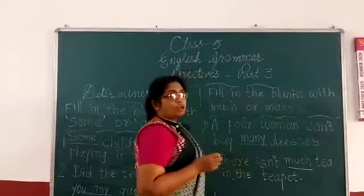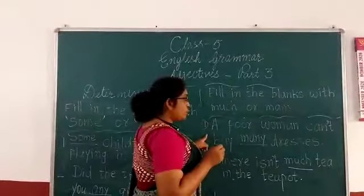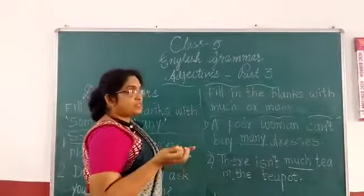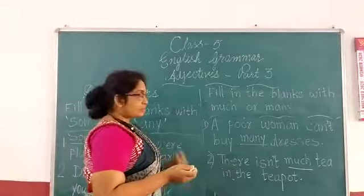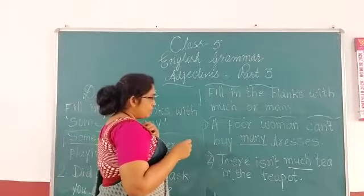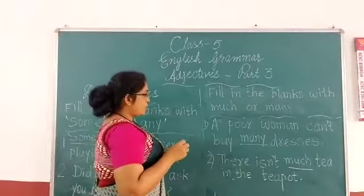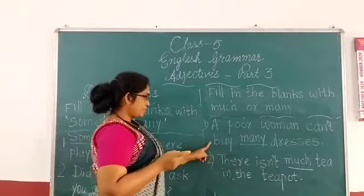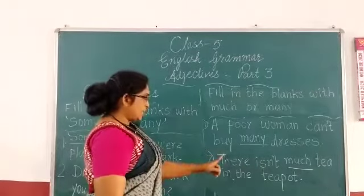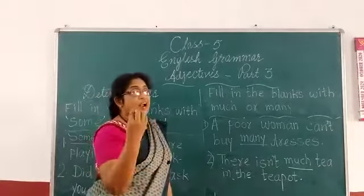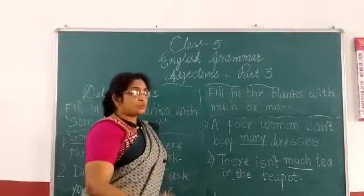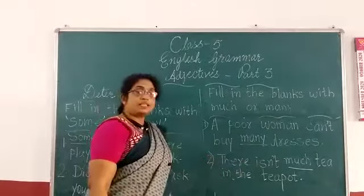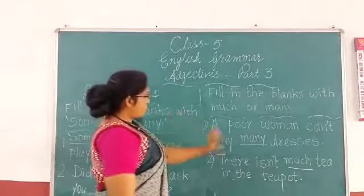Next: 'A poor woman can't buy dash dresses.' Dresses is a countable noun, so before countable nouns in this context we use 'many'. So: 'A poor woman can't buy many dresses.' Next: 'There is dash tea in the kettle.' Tea is an uncountable noun, so we use 'much': 'There is much tea in the kettle.' These are all the exercises.